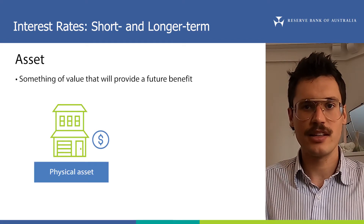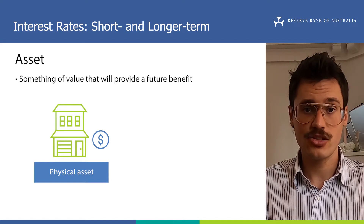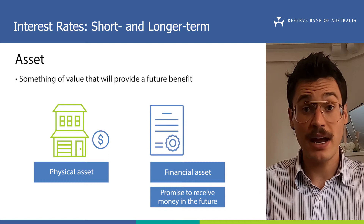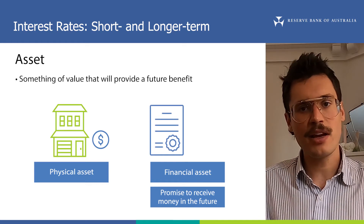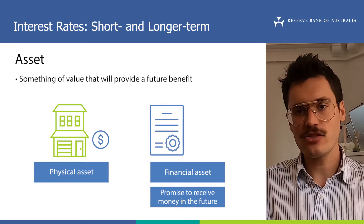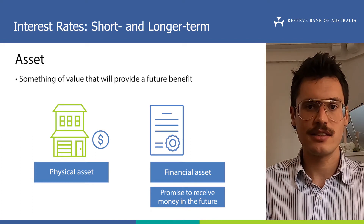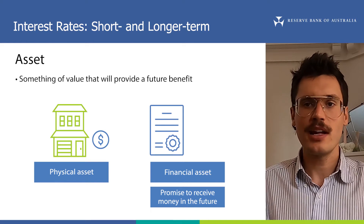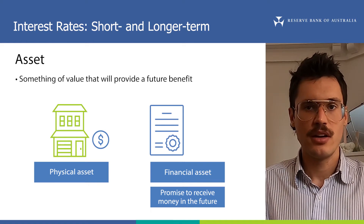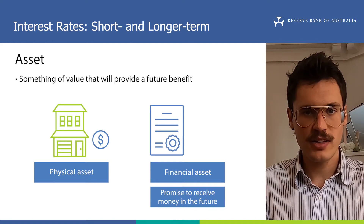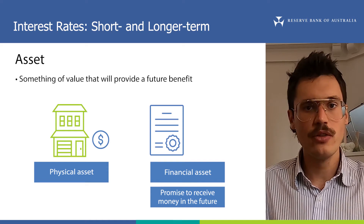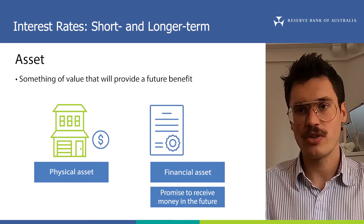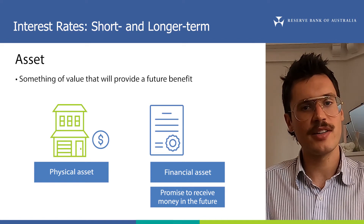A house is a physical asset because we can see and touch it. In finance, an asset is a promise from someone to pay you money in the future — the money is the benefit you receive. A financial asset is different to a physical asset because you can't really see it; it's just a promise. So an asset has something called a yield. The yield measures the future benefit the asset is expected to provide over a specific time period, such as each year, compared with the purchase price. Yields are often expressed as an interest rate.